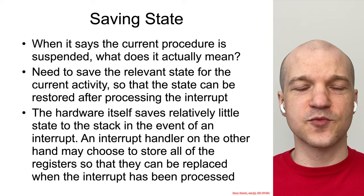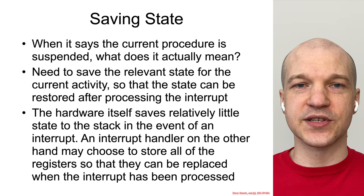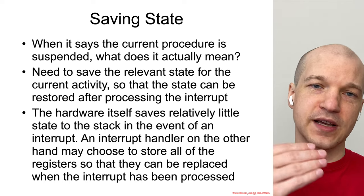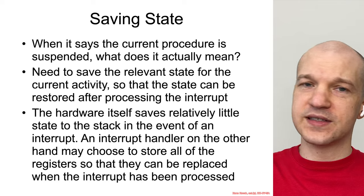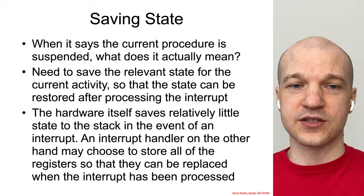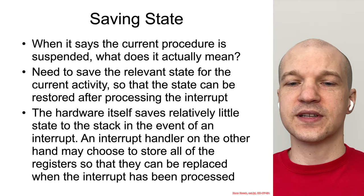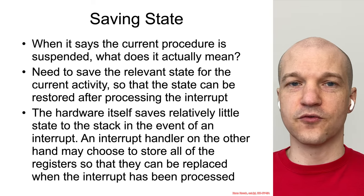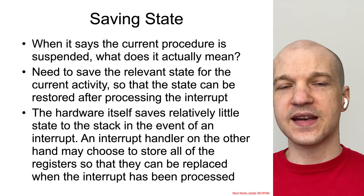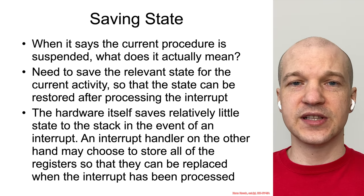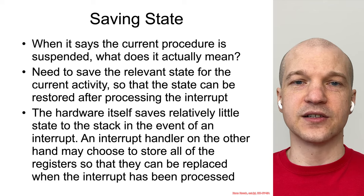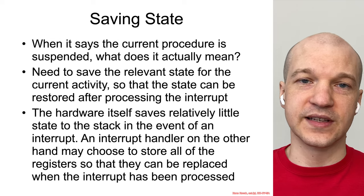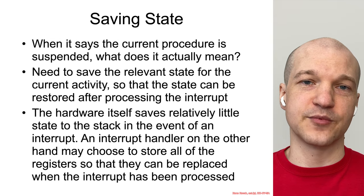So what happens when interrupts and exceptions occur is that the processor needs to save some state so that it can resume execution later if recovery is possible. The hardware saves very little state — just enough to resume execution of whatever was occurring — and then it's actually the responsibility of the exception handler or interrupt handler to save any additional state it needs in order to get back to the running state before the exception or interrupt occurred.